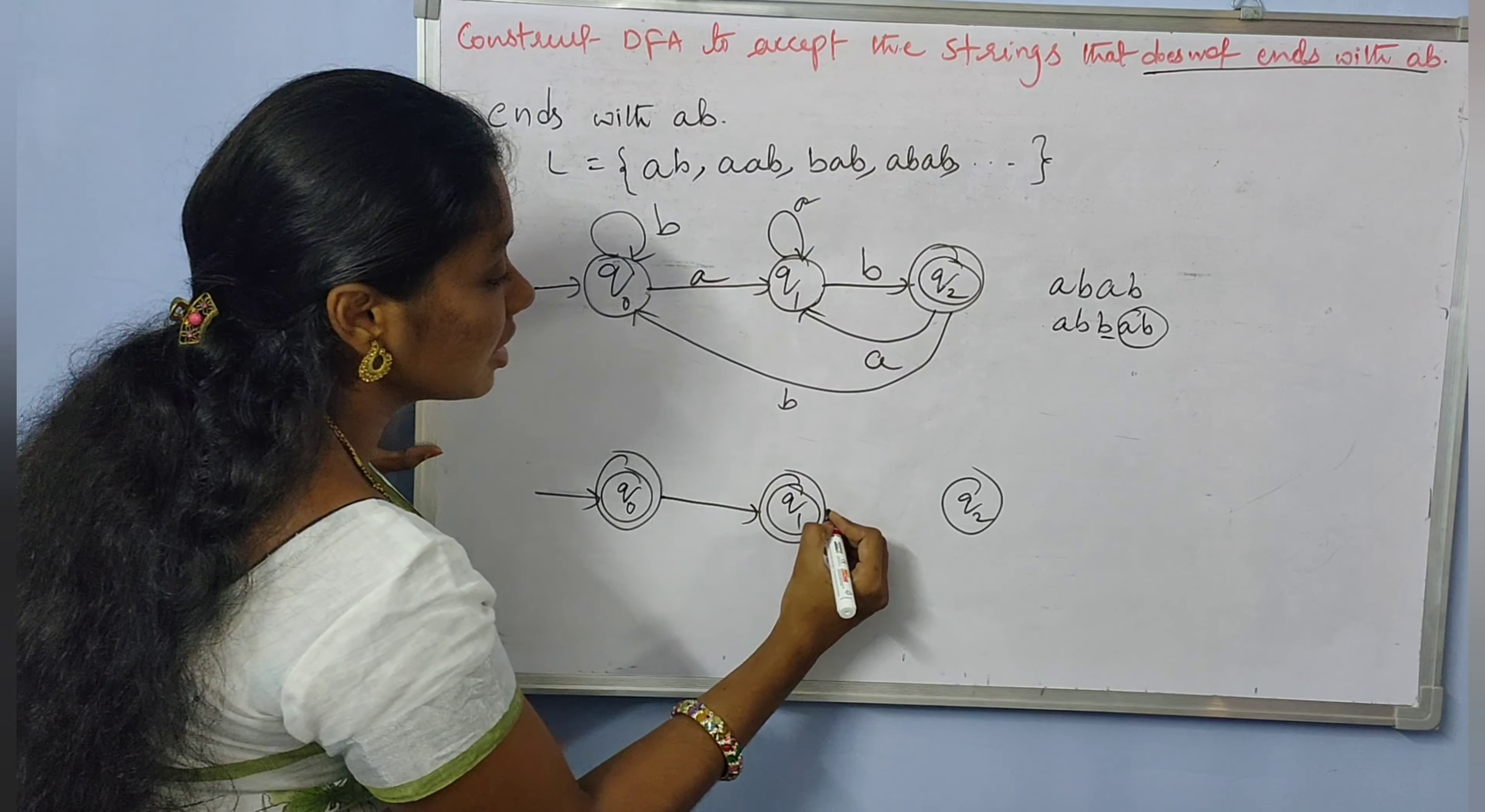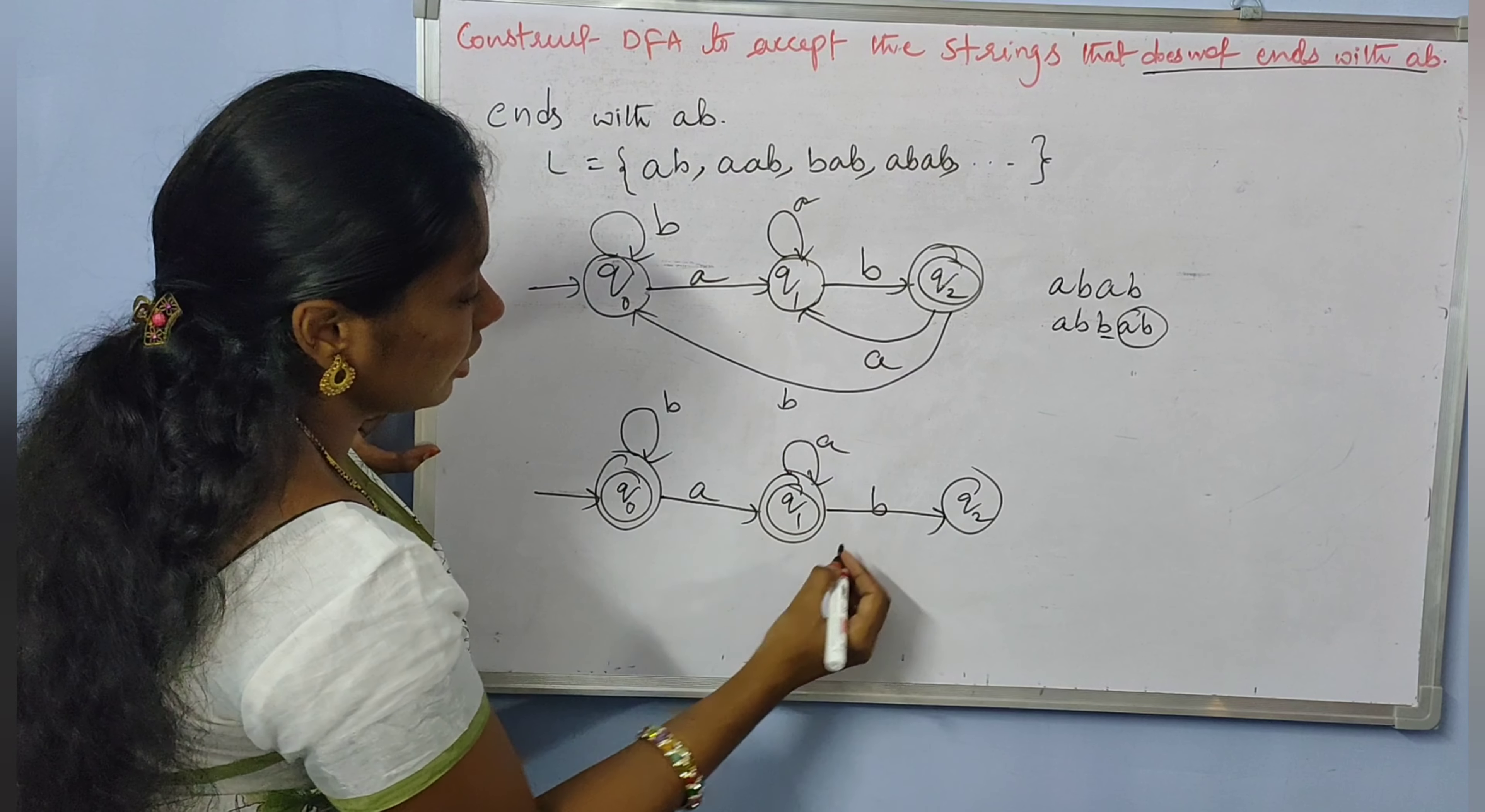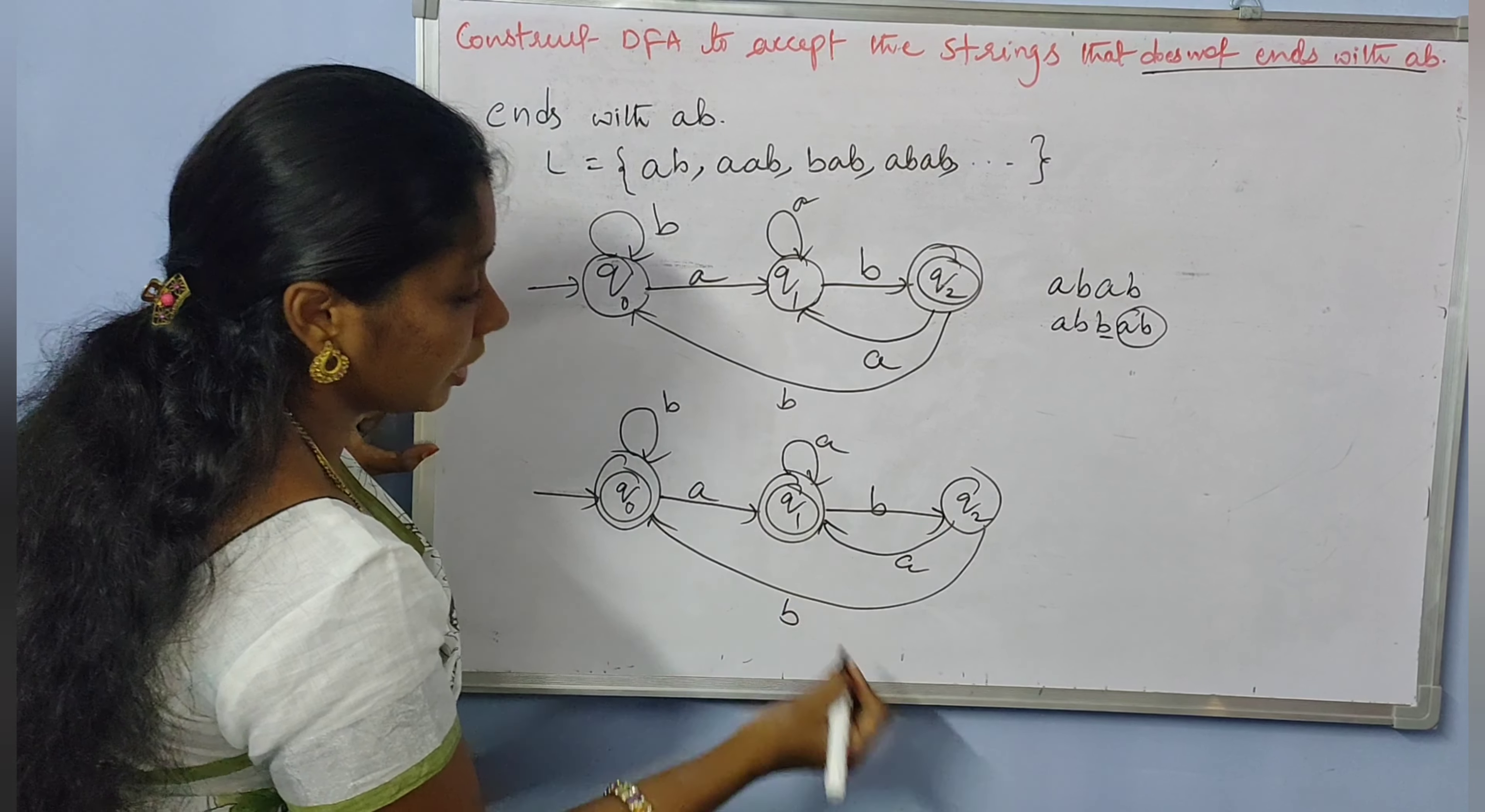So as it is, the remaining transitions we put the same. A, B here, B here, A, and A like this, and B.